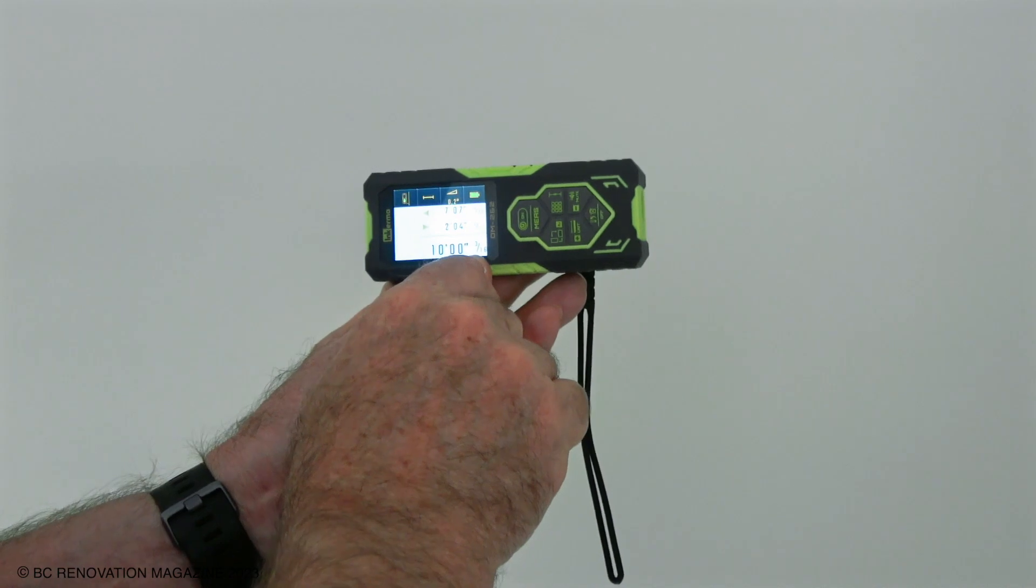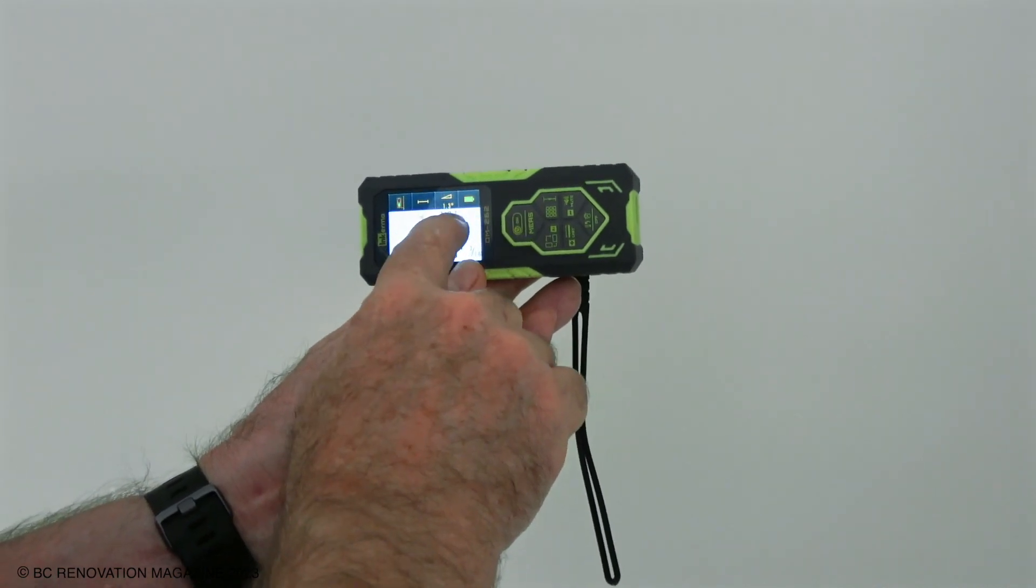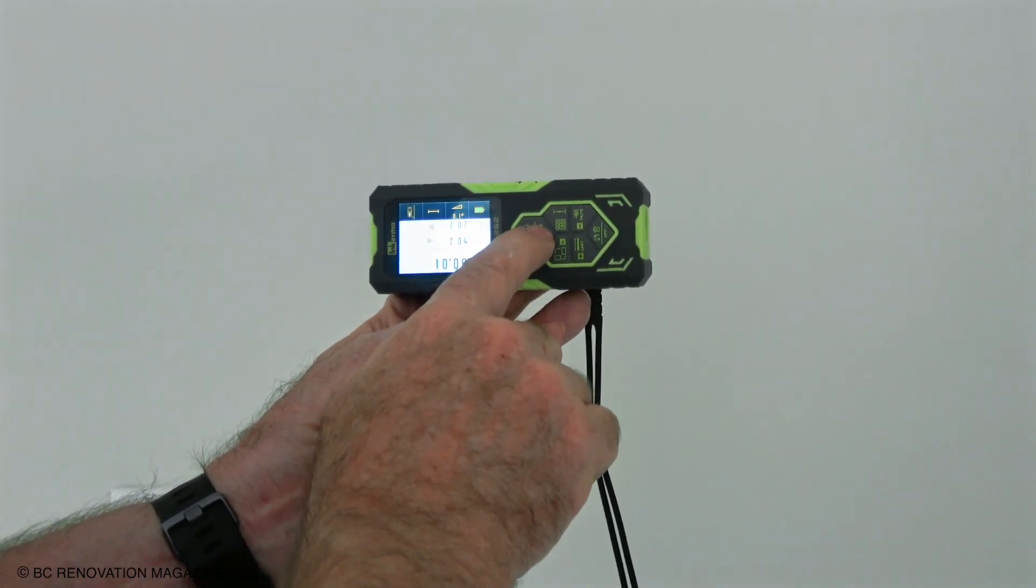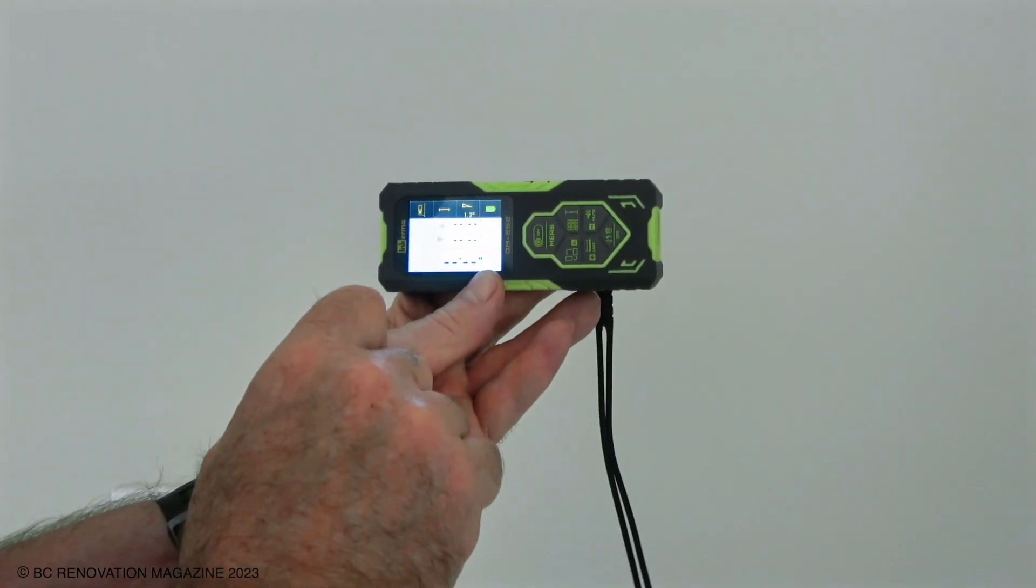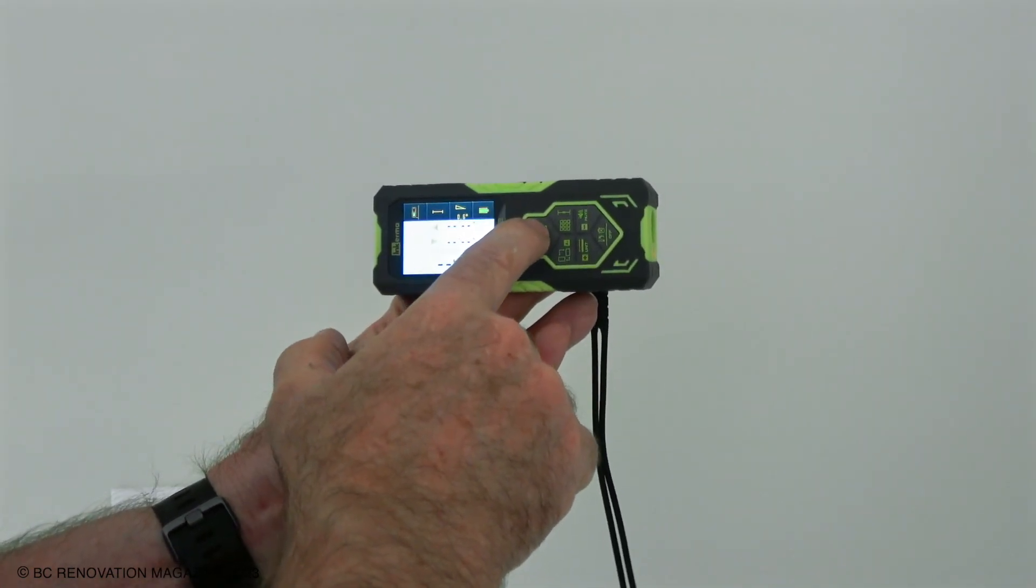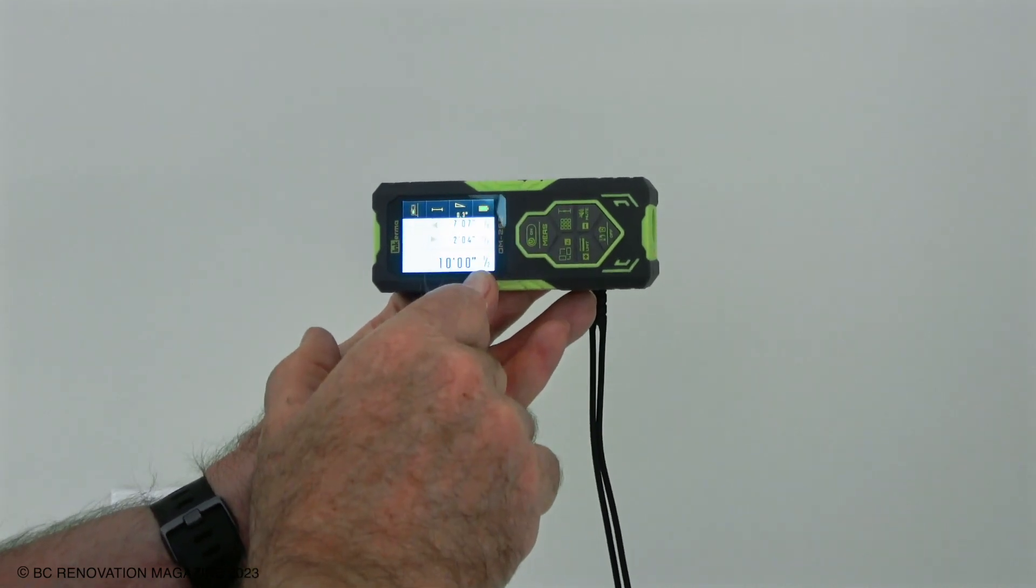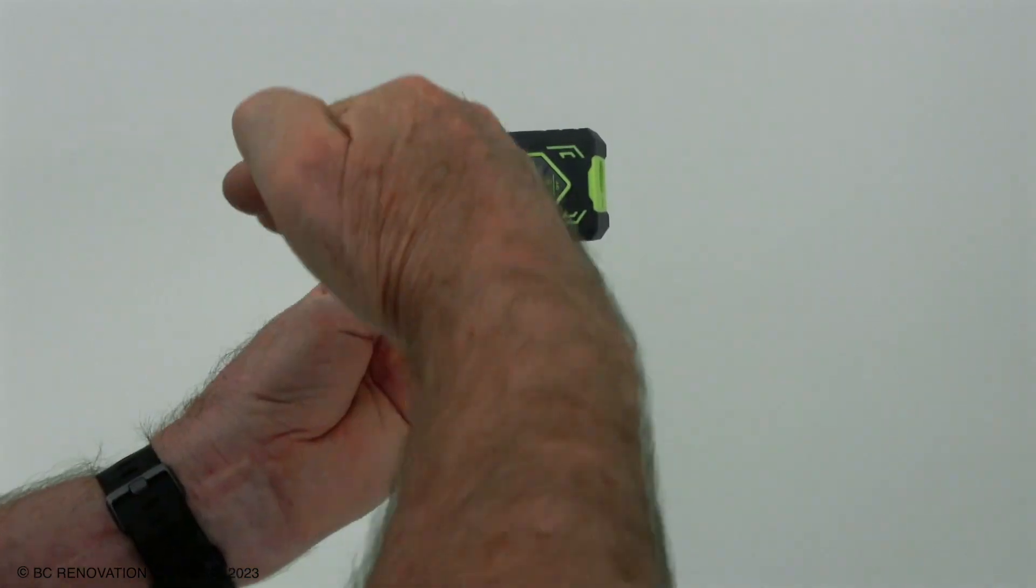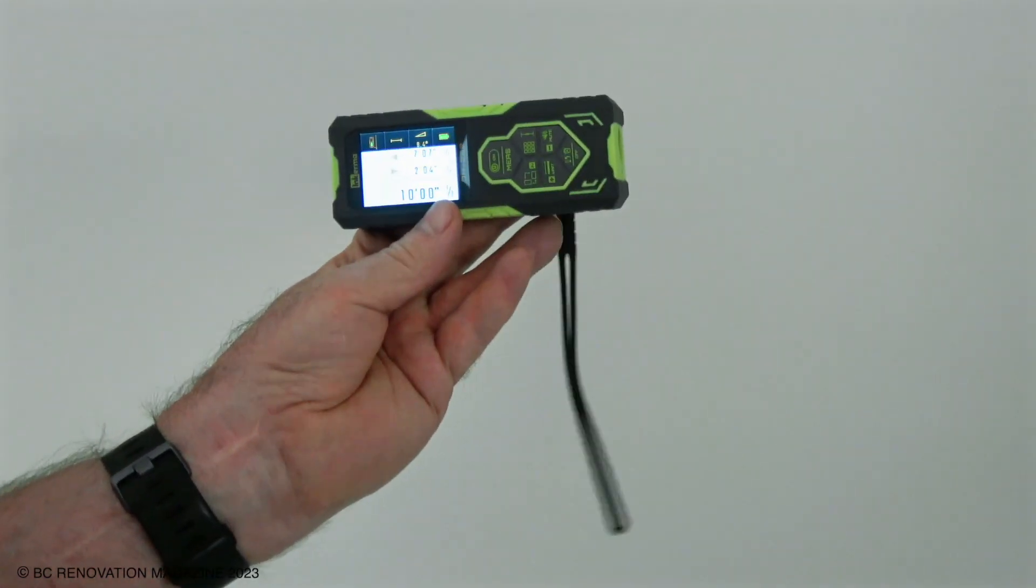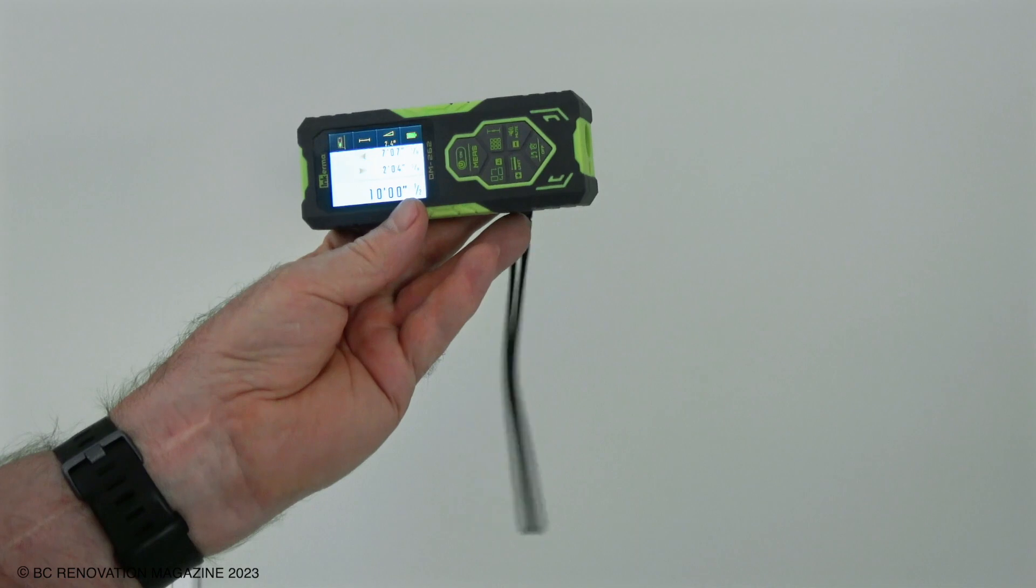Ten foot three sixteenths of an inch. Okay, I'm going to check this. Now there I am at zero. Ten foot half inch. Okay, so it's very important that you hold this thing correctly. It's got to be level to get an accurate measurement.